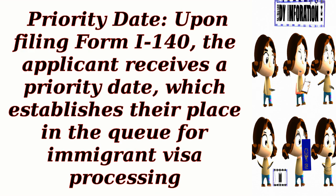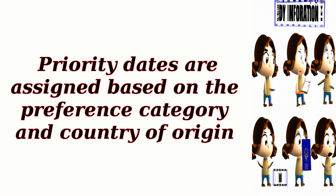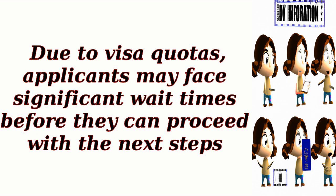Priority date: upon filing Form I-140, the applicant receives a priority date, which establishes their place in the queue for immigrant visa processing. Priority dates are assigned based on the preference category and country of origin. Due to visa quotas, applicants may face significant wait times before they can proceed with the next steps.